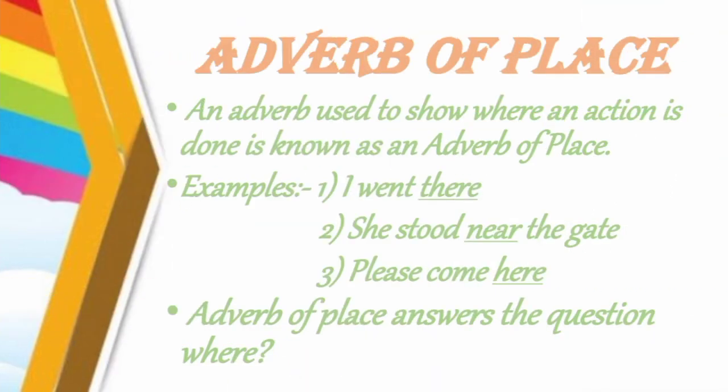Then we have adverb of place. An adverb used to show where an action is done is known as an adverb of place. Examples are: 'I went there' — 'there' is the adverb of place; 'She stood near the gate'; and 'Please come here' — 'here' is the adverb of place. Adverb of place answers the question 'where'.